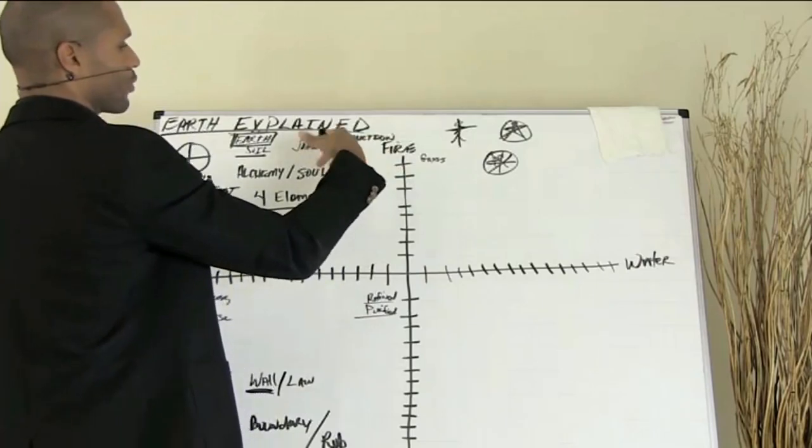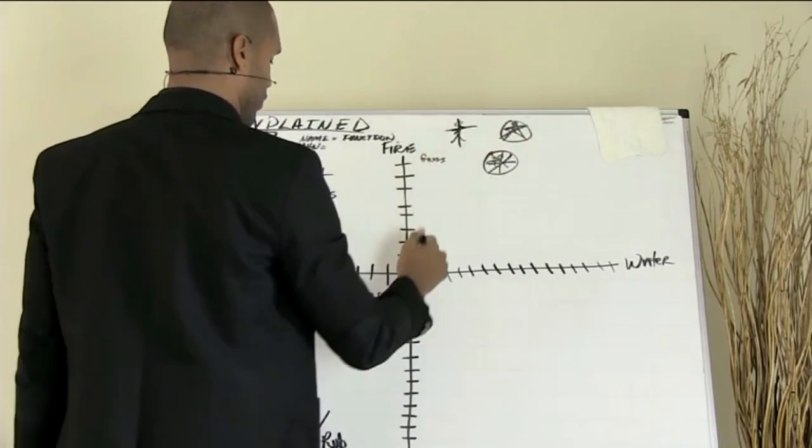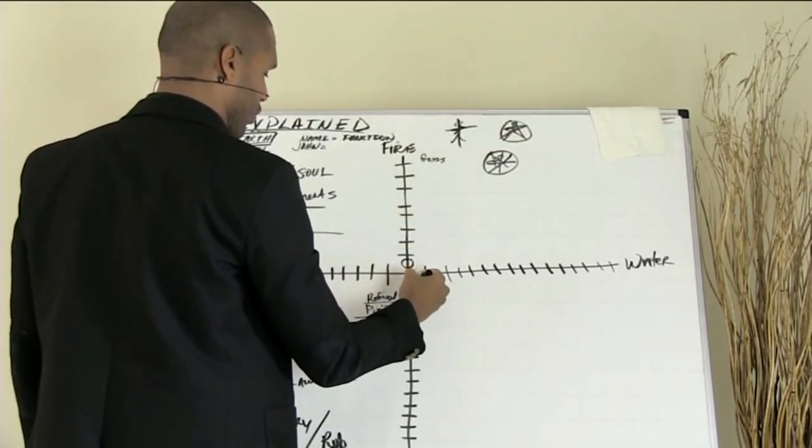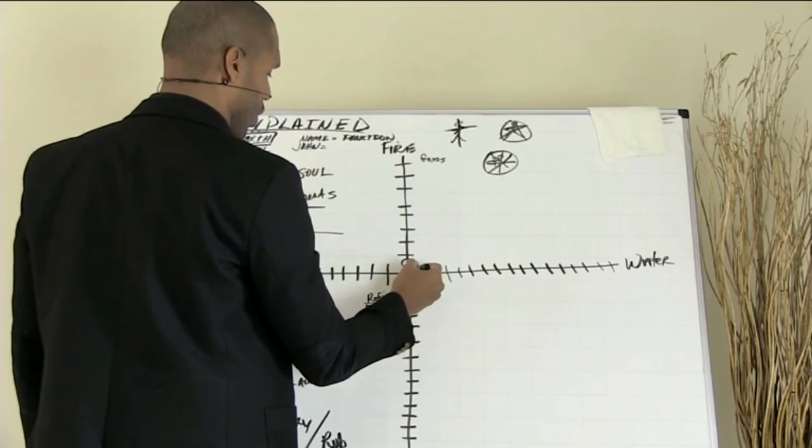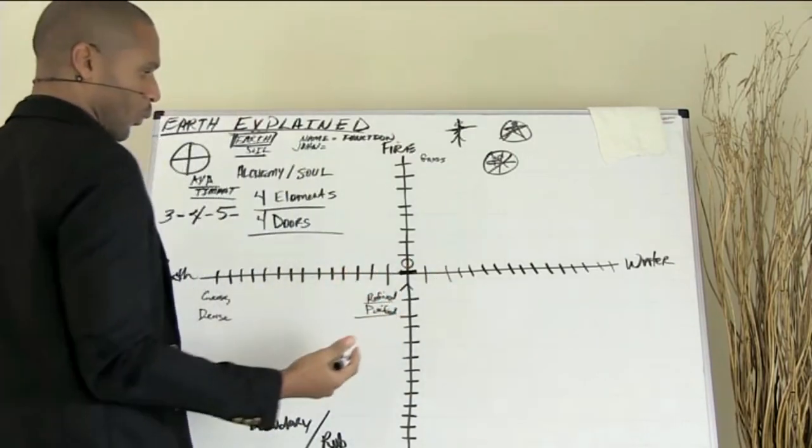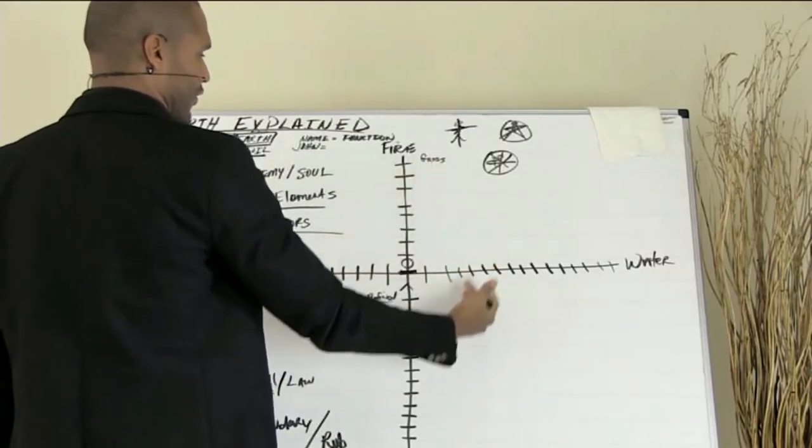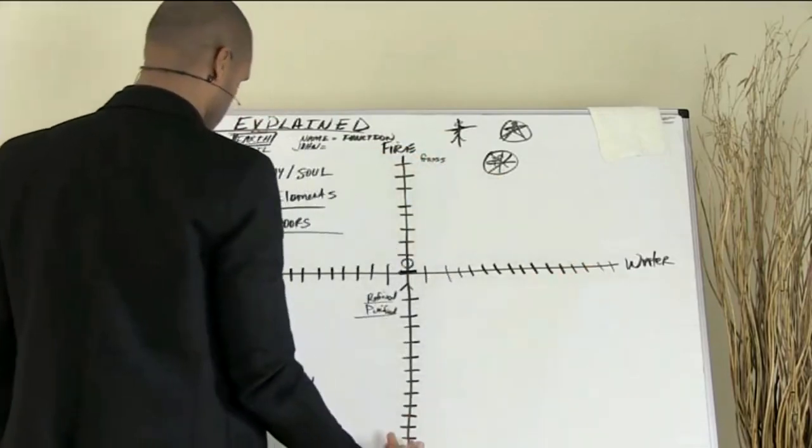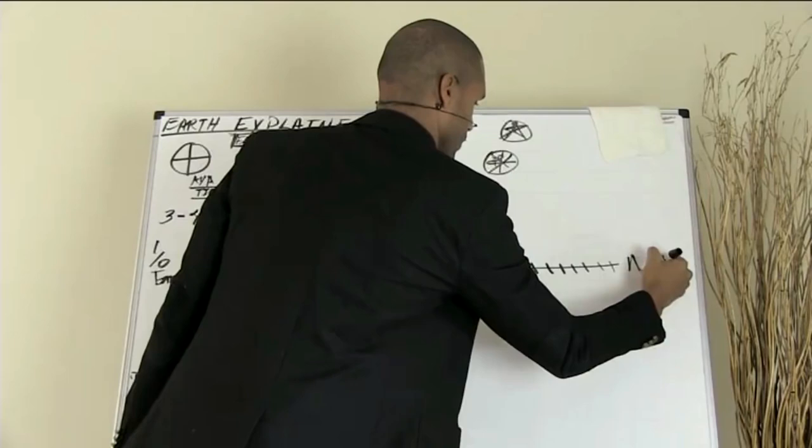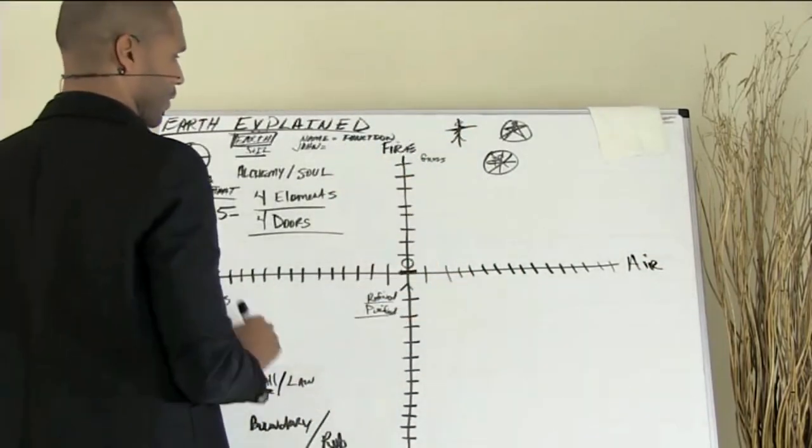As we go into this, you'll realize is that the cross symbolism has everything to do with human beings, not just a man on the cross, but human beings on this cross or this wheel. And what this wheel consists of are the elements fire, air, water, earth.